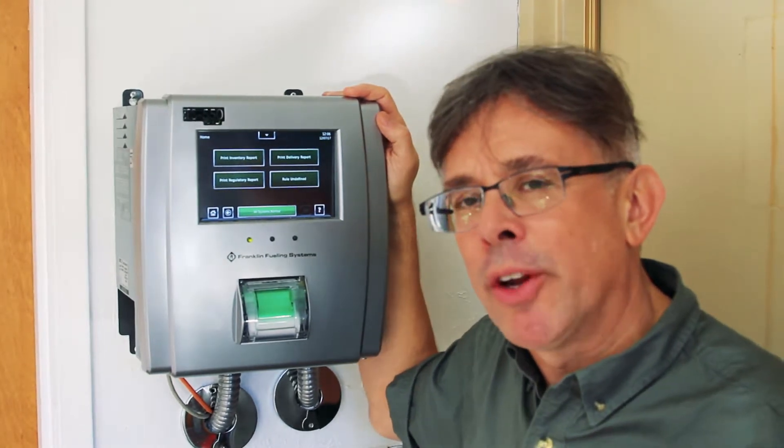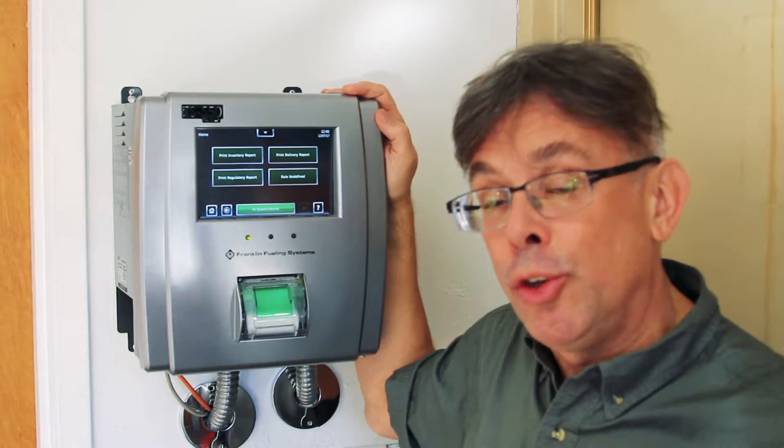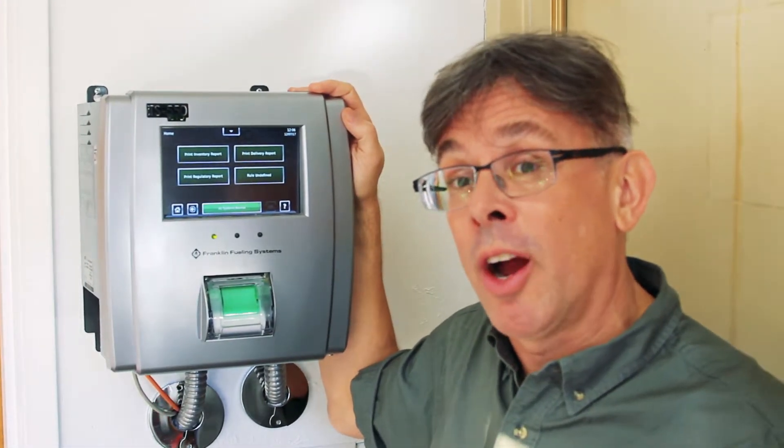I do a lot of class A and B operator training, and when I'm in front of groups of operators, I ask the question: do you have a double wall tank or a double wall pipe? And oftentimes, the operators aren't entirely sure.